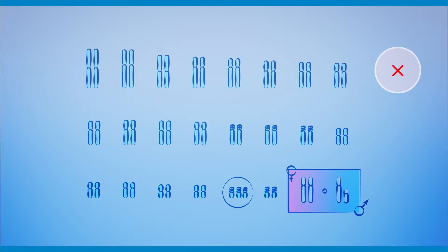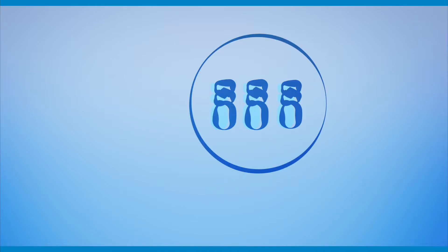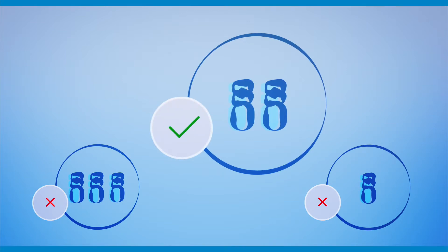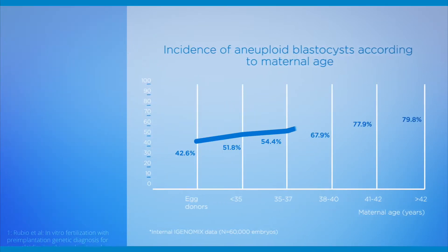Embryos without the correct count of chromosomes make it difficult for the pregnancy to occur and develop successfully. It is very important to identify embryos with the correct number of chromosomes for successful fertility treatment.